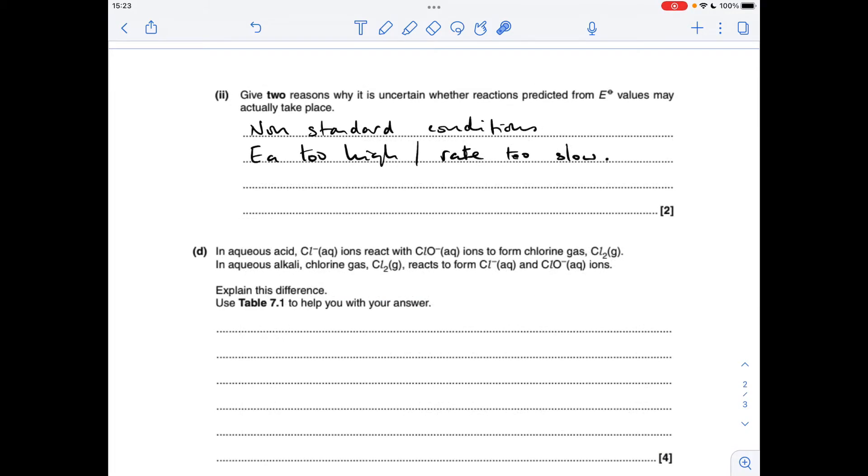Two reasons why it's uncertain whether the predictions based on the standard electrode potential values might actually take place: the conditions might not be standard, and you can give a kinetics reason, the activation energy might be too high or the rate too slow.